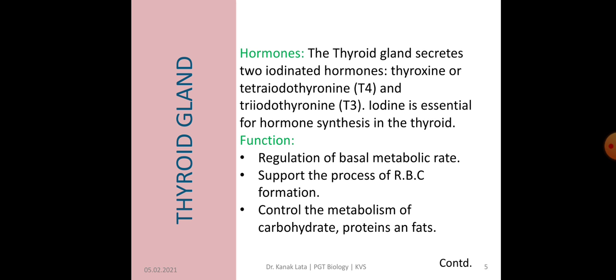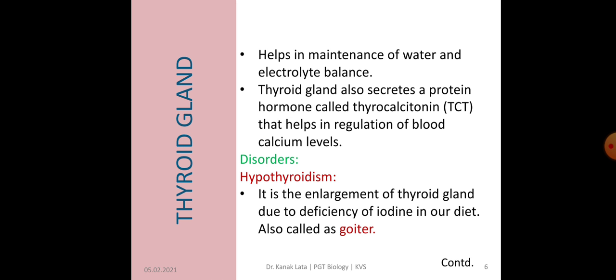The two iodinated hormones are Thyroxine or Tetraiodothyronine called as T4, and Triiodothyronine called as T3. These two hormones help in regulation of basal metabolic rate, support the process of RBC formation, and help in controlling the metabolism of carbohydrates, fats and proteins. They also help in maintaining water and electrolyte balance in our body.